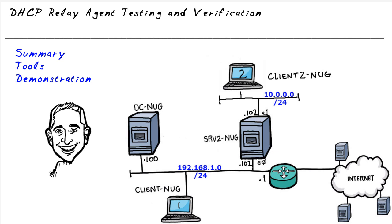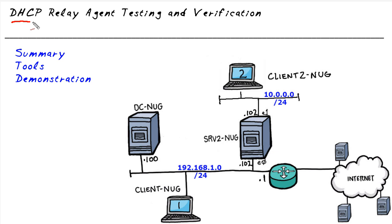One of the fun things I enjoy is that if I'm watching a season of something, usually at the beginning of that season, they'll do a quick recap of what happened in the previous season. Well, in this Nugget, we're going to focus on DHCP relay testing and verification, so let's do a really quick summary of what we set up and configured in our previous Nugget.